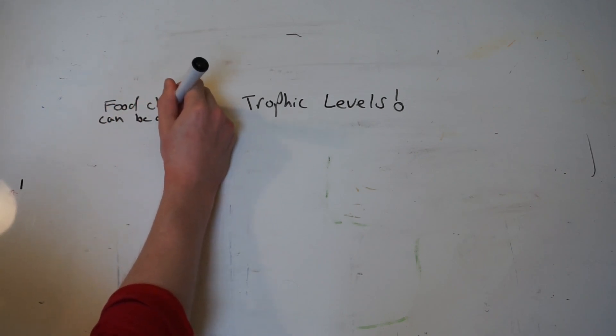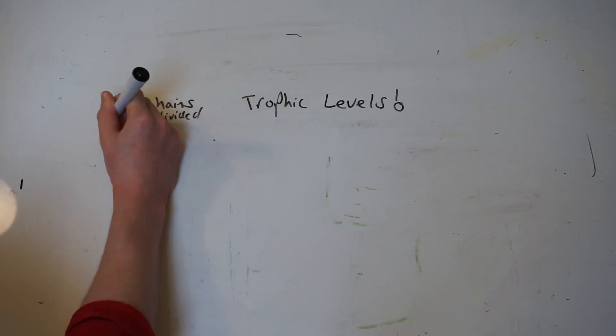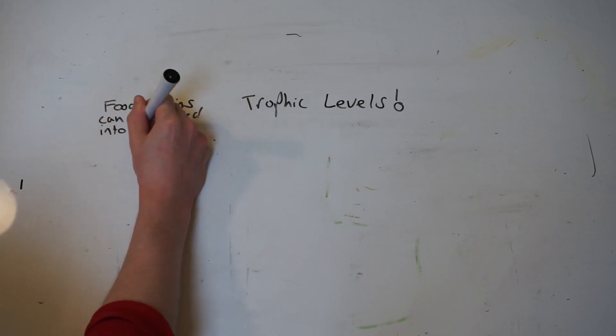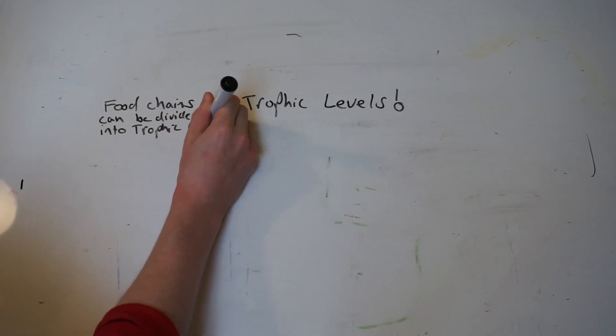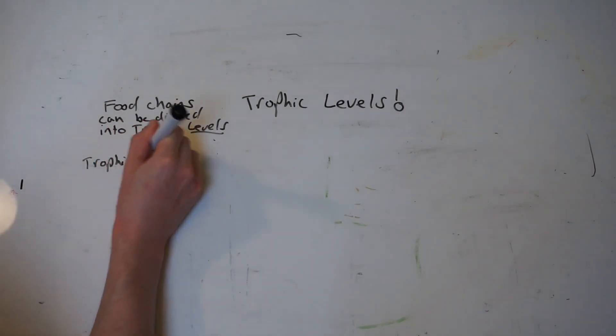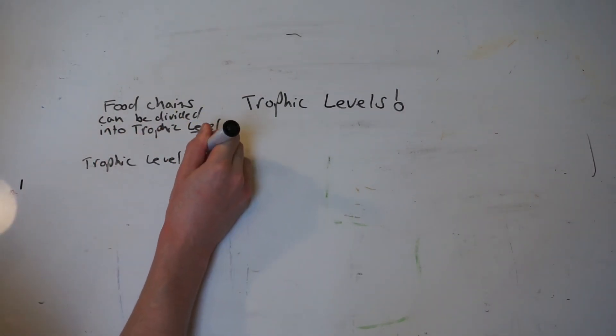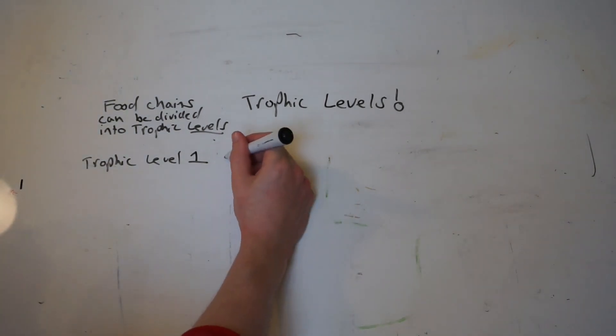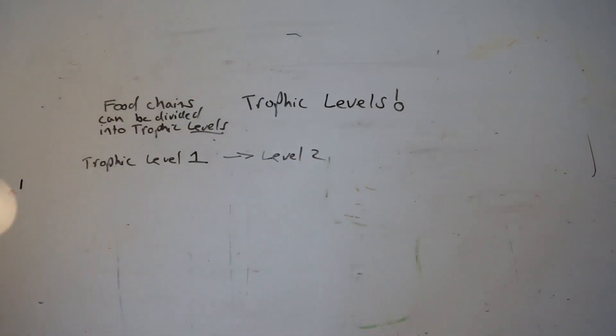You name a trophic level depending on its location in the food chain using numbers. The first level would be called trophic level one, and then each level after that is numbered in order based on how far along the food chain it is: trophic level one, two, three, four, and so on, depending on how many levels are in the food chain.